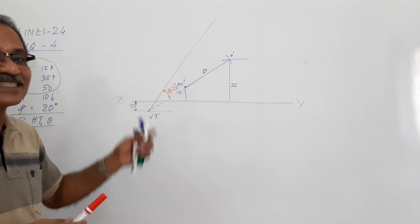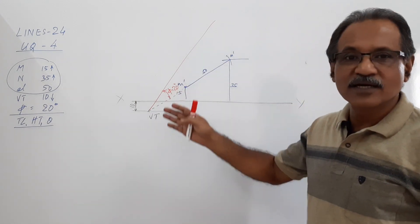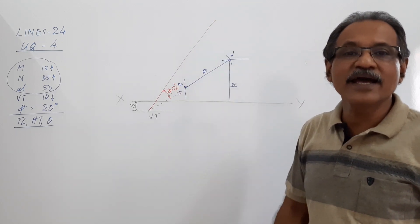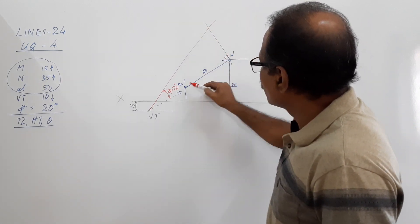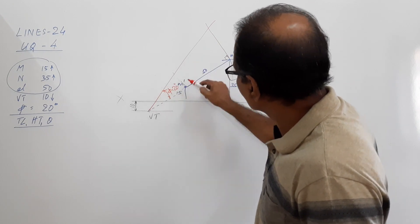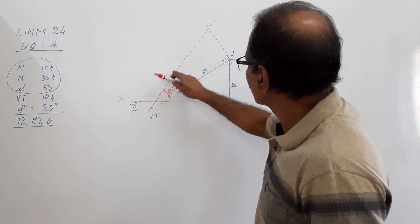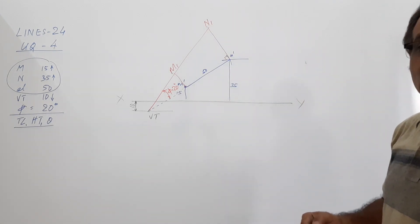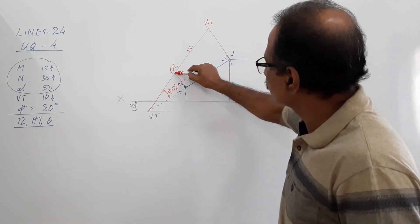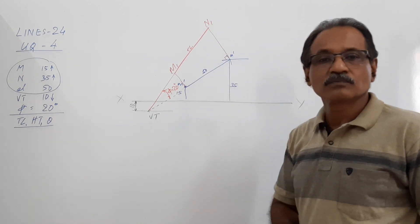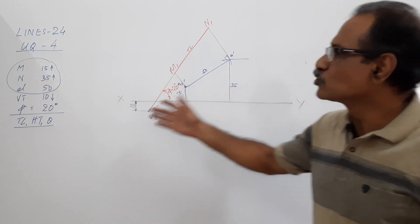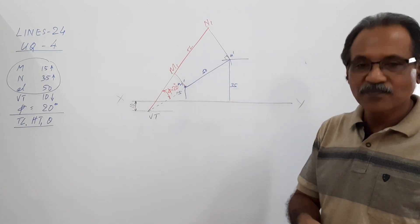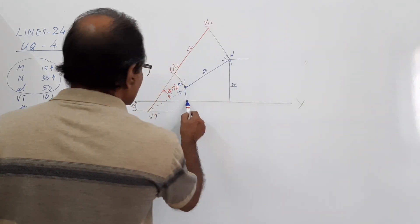Phi is given as 20. So at VT, draw a line inclined at phi equals 20. This line contains true length. According to trapezoidal concession, this line contains true length. This is true length. Agreed?